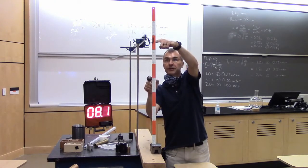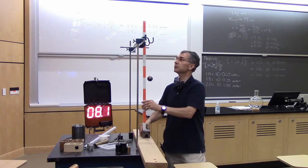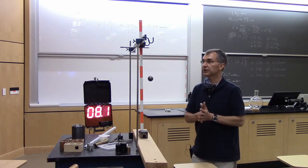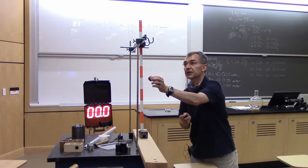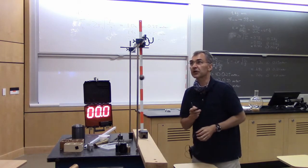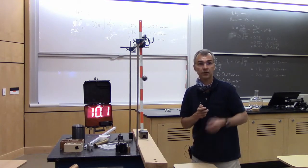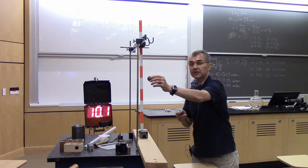I adjusted the string length to 25 centimeters — a quarter of a meter. So we expect the period of oscillation for this bob on the end of the string to be 1 second, meaning 10 back-and-forth swings should take 10 seconds. [counts 0 through 10] We predicted 10 seconds and we got 10.1 seconds.